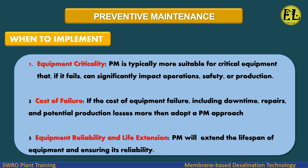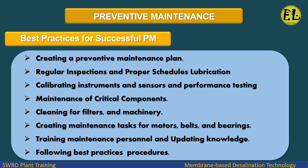Best practices for successful PM: Creating a preventive maintenance plan; regular inspections and proper schedules; lubrication; calibrating instruments and sensors and performance testing; maintenance of critical components; cleaning for filters and machinery; creating maintenance tasks for motors, belts, and bearings; training maintenance personnel and updating knowledge; and following best practices procedures.